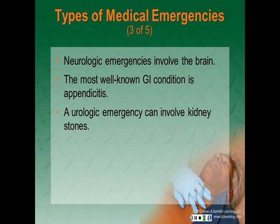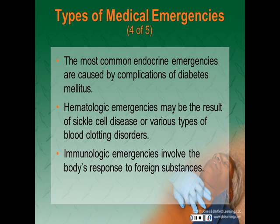The most well-known GI condition is appendicitis. There are many others including diverticulitis and pancreatitis. A urologic emergency can involve kidney stones. The most common endocrine emergencies are caused by complications of diabetes mellitus. Hematologic or blood emergencies may be the result of sickle cell disease or various types of blood clotting disorders such as hemophilia. Immunologic emergencies involve the body's response to foreign substances.